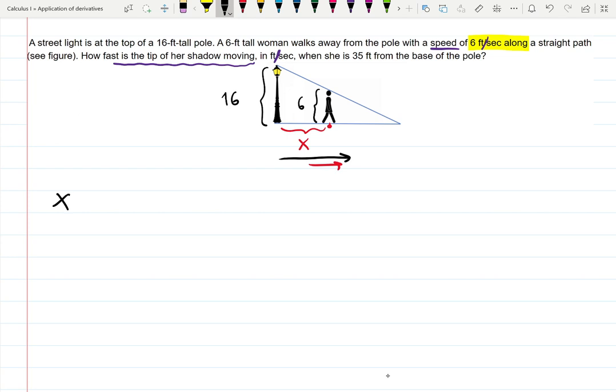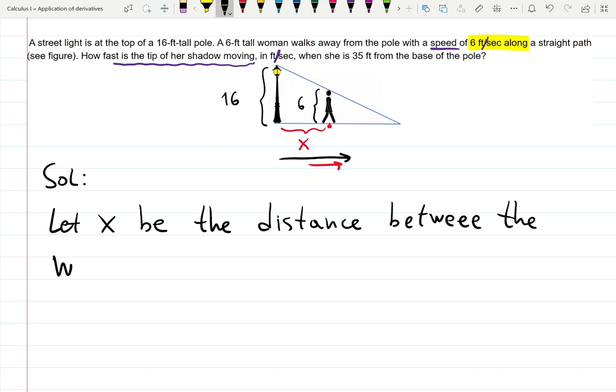So that is a variable. We can say x is a distance between the woman and the pole. That's my solution. Let x be the distance between the woman, let's call it just W, and the pole. That is a changing distance and derivative of that changing distance is going to give you speed with which the woman is walking away from the pole.